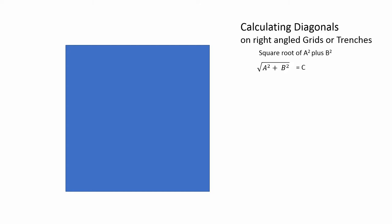A squared plus B squared, that's the two sides of the rectangle. So, when you do the square root of that, equals the diagonal. So, for a 1 meter by 1 meter square, that's 1 squared plus 1 squared. Do the square root of that, and you get 1.414.